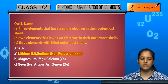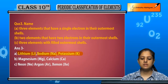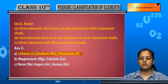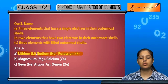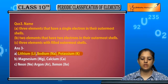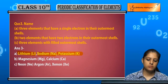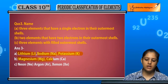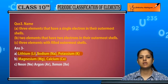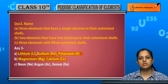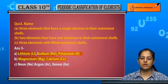Next, two elements that have two electrons in their outermost shell. Outermost shell में दो electrons होने चाहिए, तो magnesium और calcium की outermost shell यानि की valence shell में दो electrons होते हैं।